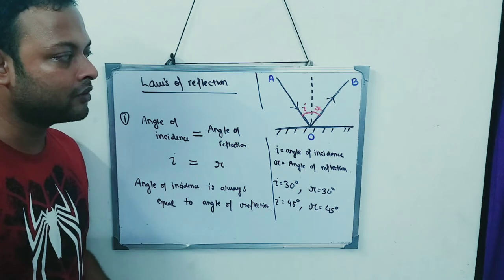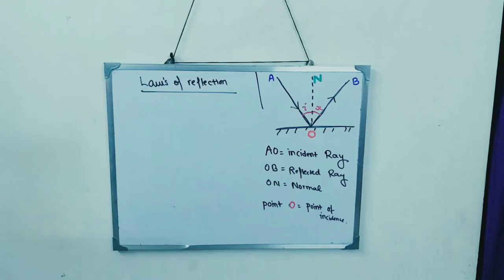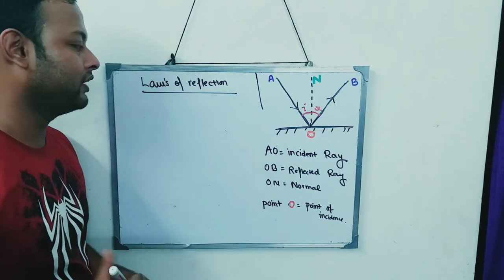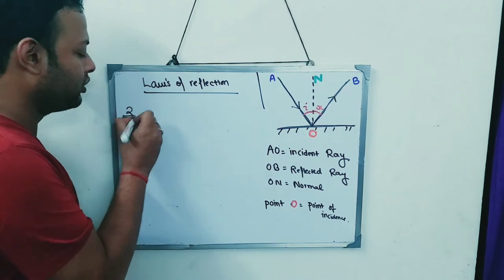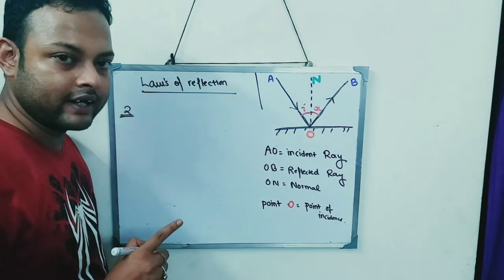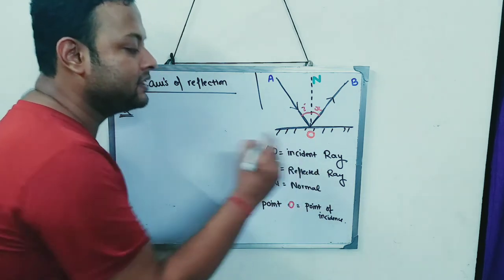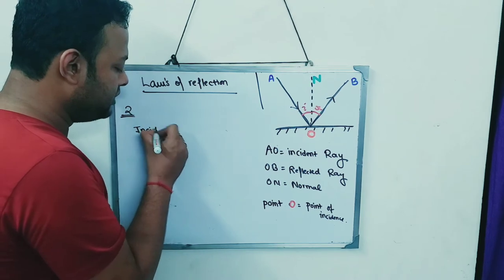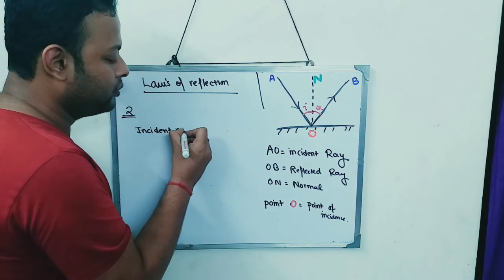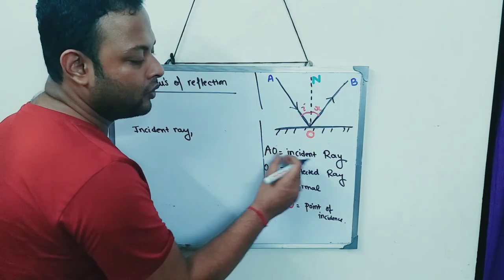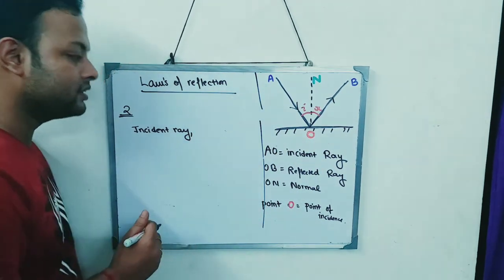Now we will discuss the second law of reflection. The second law of reflection states that my incident ray — which is AO over here — is the incident ray.